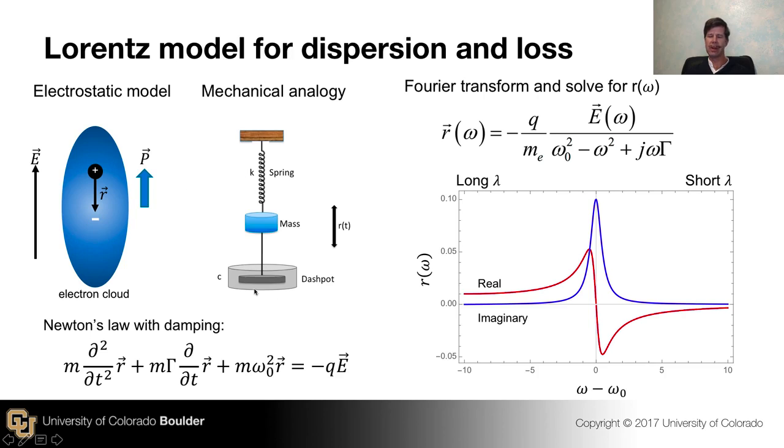So the simple classical mechanical model of that is that the electron cloud is represented by some mass. The electrostatic attraction between the electrons and the nucleus is a spring that's linear in its force relative to the displacement. And because we expect that the electron cloud is not going to oscillate forever if it's hit by an impulse, we'll include a viscous damping term. This is called a dashpot in the language of mechanics. It simply means a plunger in some viscous liquid that dissipates energy.